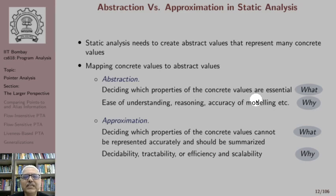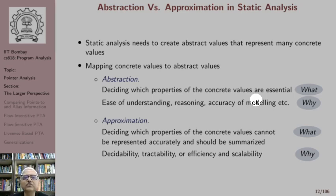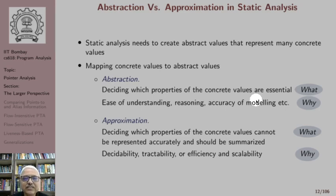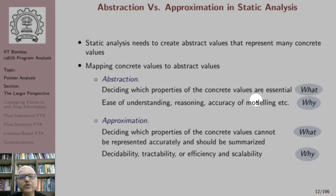You may have often seen pictures in which human beings are shown using stick figures — just drawn using sticks. There are two sticks that show hands, one stick that shows the body, two sticks that show legs, and a circle for the head. This is an abstraction. This abstraction is useful when we have to do things like counting the number of human beings, but it is not useful when we are talking about the height or weight of a human being.